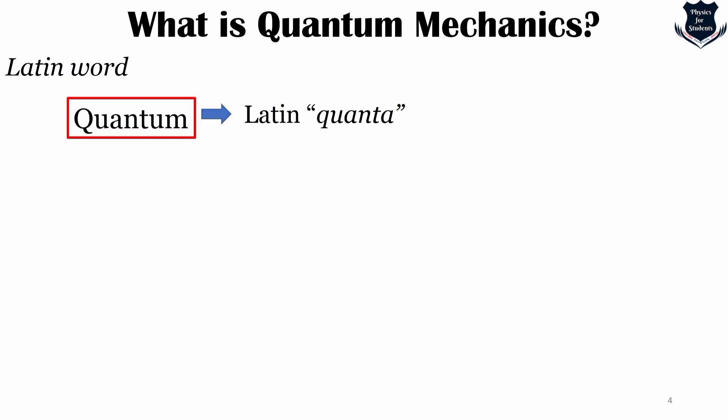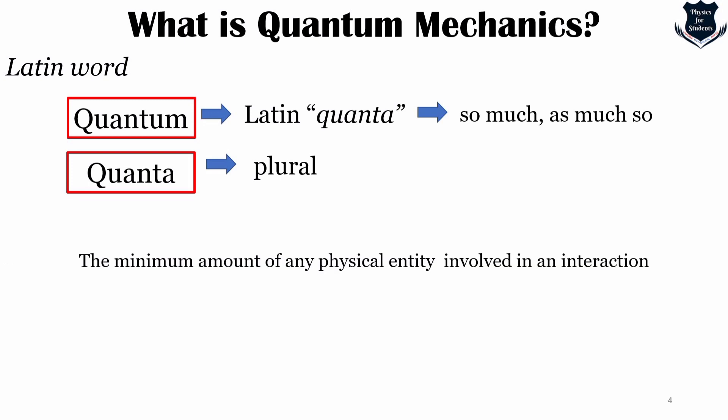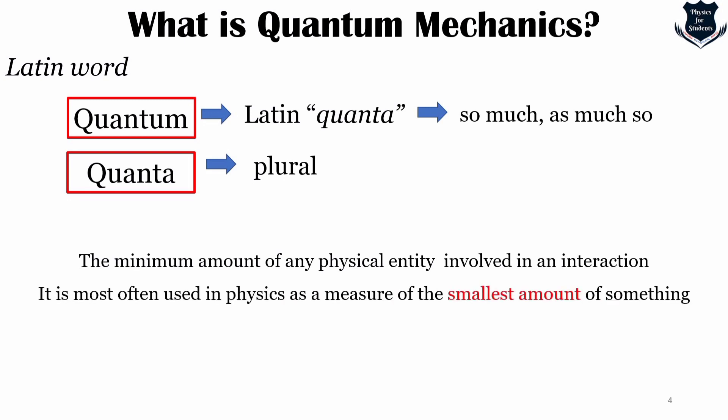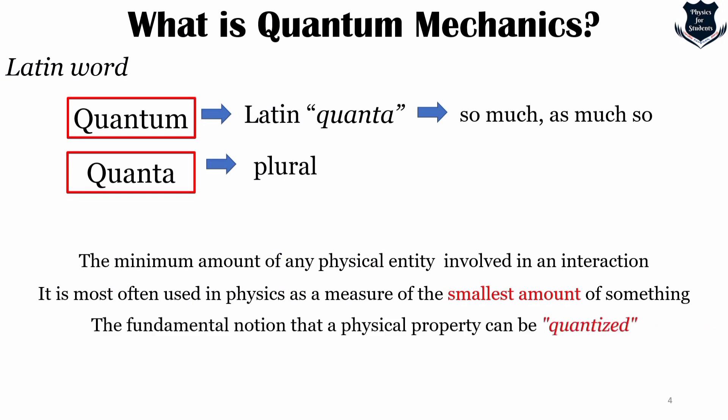The word comes from 'quanta,' the Latin word which means 'so much' or 'as much.' Quantum mechanics differs from classical mechanics in that energy, momentum, angular momentum, and other quantities of a bound system are restricted to discrete values — which is called quantization. It is often used in physics to tell what is the smallest amount of something. The fundamental notion of quantize means objects have characteristics of being discrete.